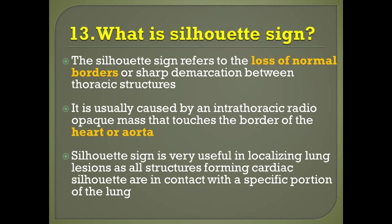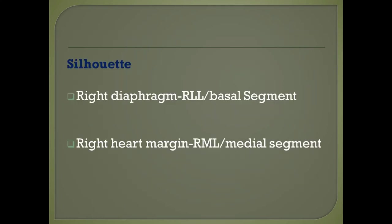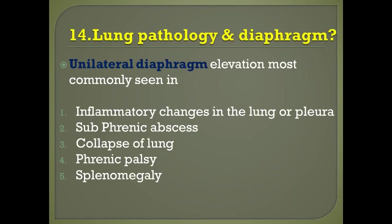Always look for the cardiac silhouette on the chest X-ray. Question number thirteen: what is the silhouette sign? The silhouette sign refers to the loss of normal borders or sharp demarcation between thoracic structures. It is usually caused by an intrathoracic radio-opaque mass that touches the border of the heart or aorta. The silhouette sign is useful in localizing lung lesions. For example, if you cannot see the right diaphragm properly, there may be pathology around the right lower lobe basal segment. If you cannot see the right heart margin, there may be pathology around the right middle lobe medial segment.